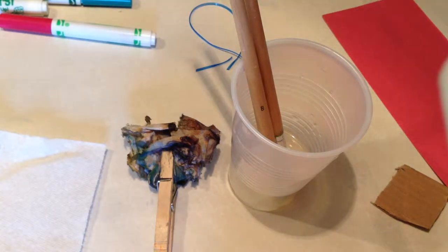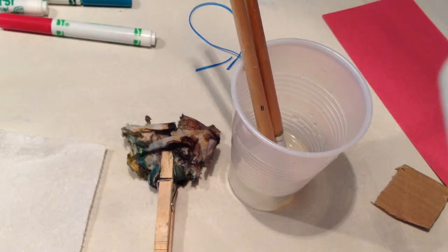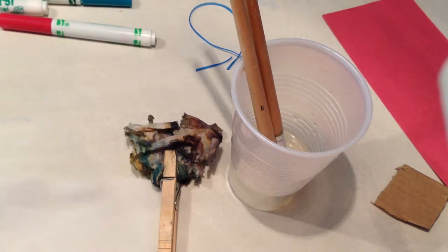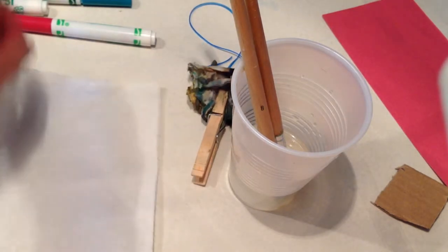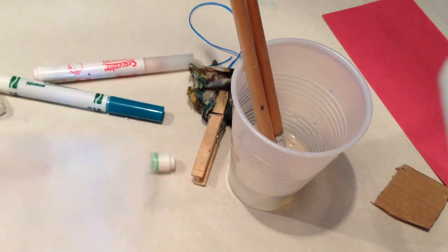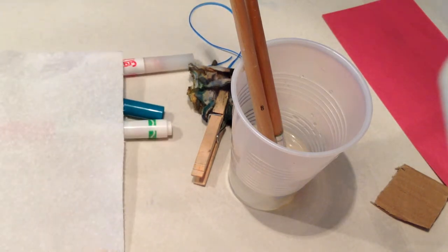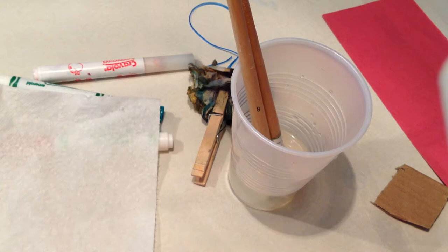Today we're going to be making paper towel flowers. What you're going to need is a paper towel, markers, water, a brush, and a clothespin.